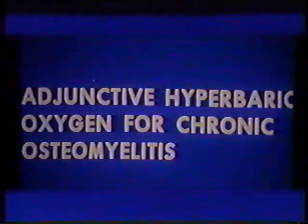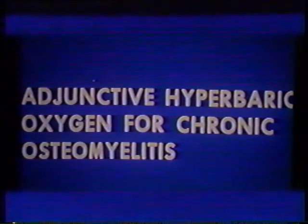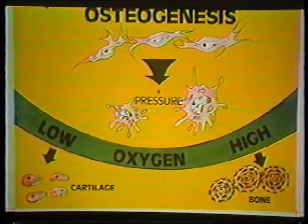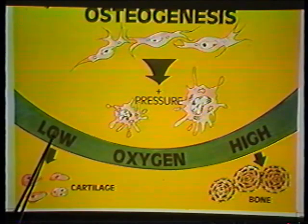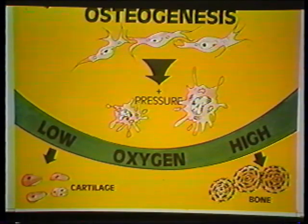Let us now look at some of the specific diseases that can be treated with hyperbaric oxygen. We'll begin with chronic osteomyelitis. Regarding osteogenesis, as oxygen pressure increases there is more of a tendency to form bone, whereas at low O2 levels, cartilage is the chief product of osteoblastic activity. This parallels what happens normally after a fracture: there will be low O2 in the area of the wound, and cartilage and callus are formed, which later become hardened into bone as more vascularity is established in the fracture area.